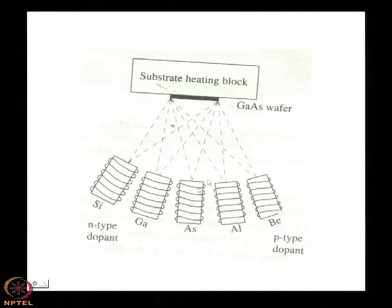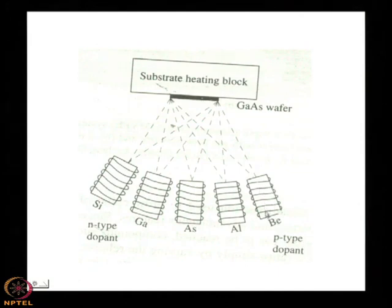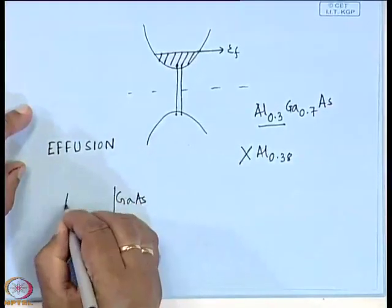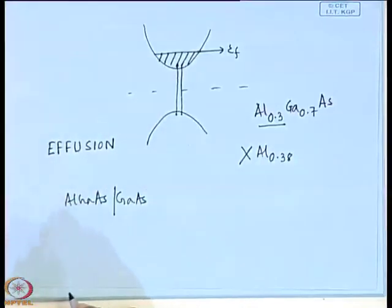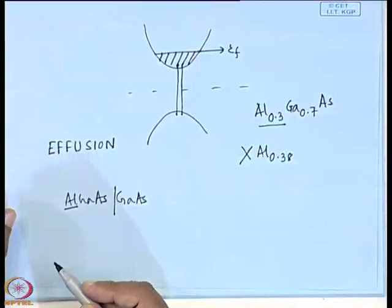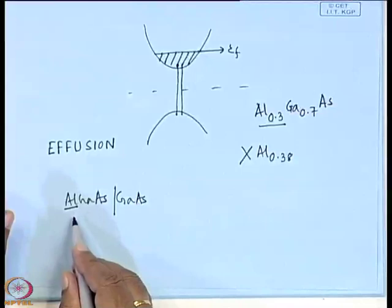The effusion cells contain silicon (for N-type doping), beryllium (for P-type doping), gallium, arsenic, and aluminum. The GaAlAs system — gallium arsenide and aluminum gallium arsenide — has been the most important system in MBE development. Adding aluminum increases the band gap of GaAs from 1.43 eV up to about 1.8 eV, which is needed for specific applications.